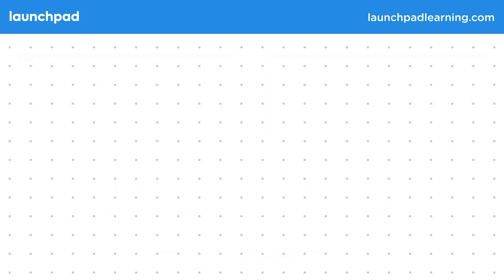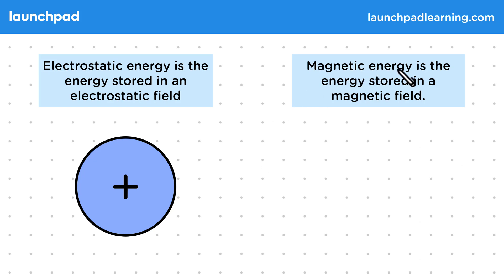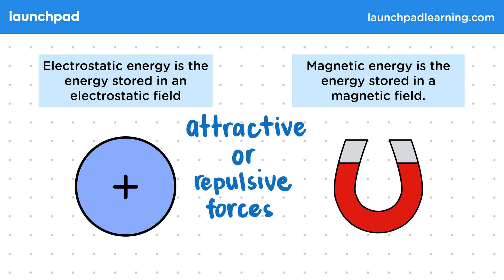The next two types are quite similar. Electrostatic energy is the energy stored in an electrostatic field. Note that this is not the energy carried by an electric current, but rather a type of energy we associate with the forces from electrically charged objects, like protons and electrons. Then magnetic energy is the energy stored in a magnetic field — in other words, it's the type of energy we associate with the forces on magnetic objects. Since both charged objects and magnetic objects can experience attractive or repulsive forces, they can start moving from these forces, so we must be transferring some sort of energy to kinetic energy. This is similar to how objects can suddenly start falling because they have gravitational potential energy. Objects in an electrostatic field or a magnetic field can suddenly start moving as they have energy stored while in these fields.